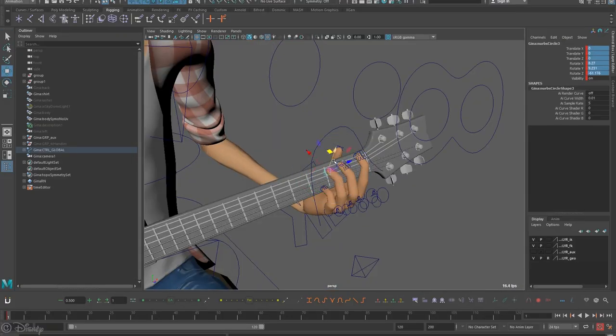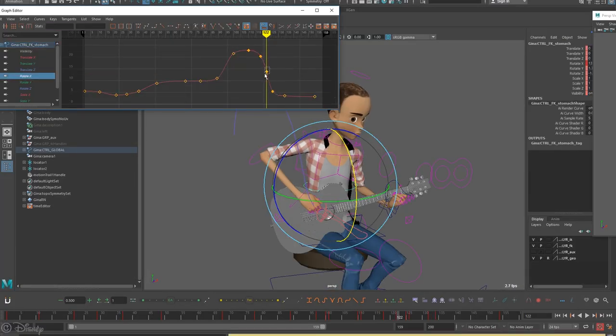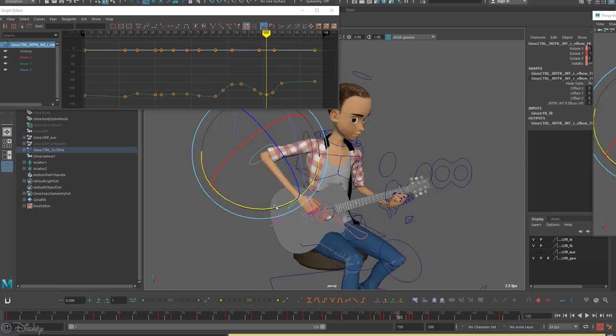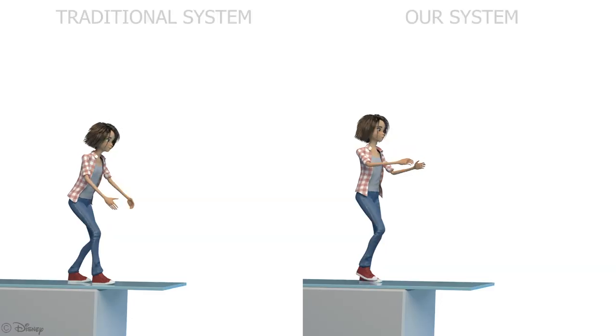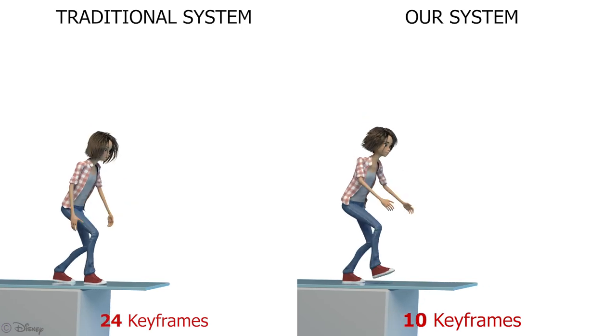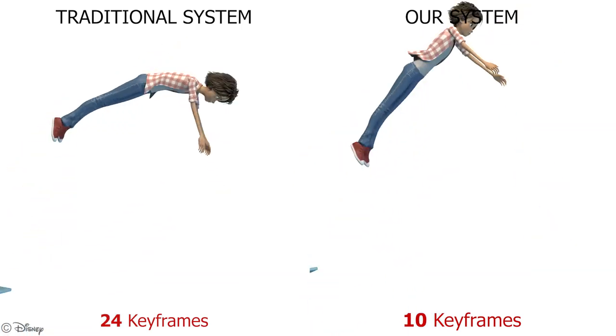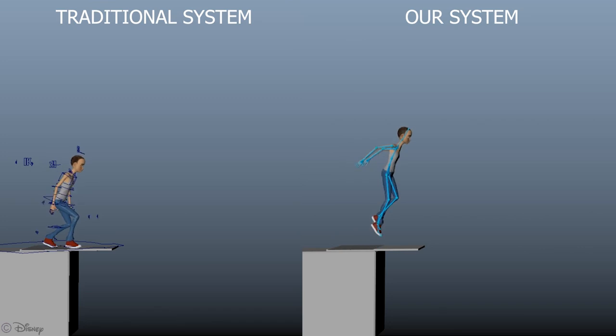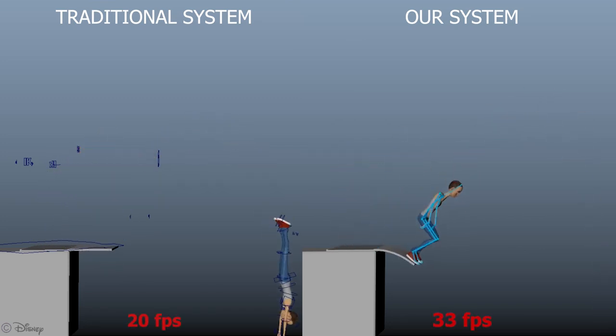For comparison, we asked professional animators to create the same animations using traditional tools in Maya. It came out that in average, they required more than twice more keyframes than with our tool. Also, since they were using some IK interpolations, the rig evaluation was 40% slower.